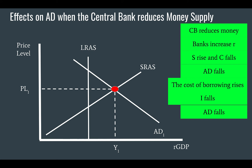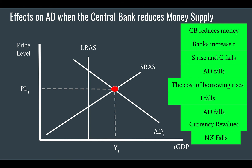Investment falls and therefore aggregate demand falls. Finally, the currency revalues — particularly if it's an intentional action by the European Central Bank, the Fed in America, the Bank of Japan, the Bank of England, or whichever central bank — and that causes the currency to rise in value against other currencies. That causes net exports to fall because exports fall (our domestically produced goods are more expensive) and imports rise (foreign-produced goods are less expensive), and that again causes aggregate demand to fall. With those three reasons combined with the multiplier, the aggregate demand curve falls.